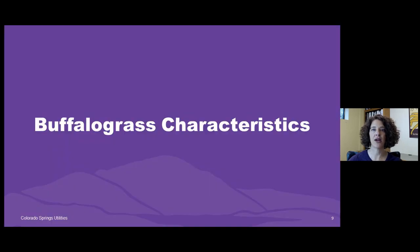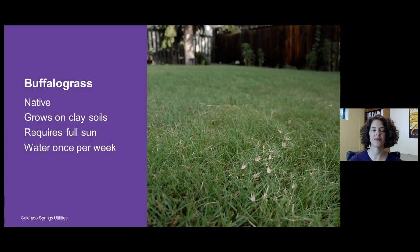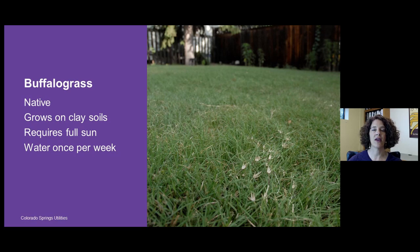Let's talk briefly about buffalo grass characteristics. Buffalo grass is a native grass commonly found on the eastern plains of Colorado, typically growing in areas with some clay content in the soil. It requires full sun but offers significant water savings — rather than watering three times a week, buffalo grass can be watered once per week and look very nice, or even less.